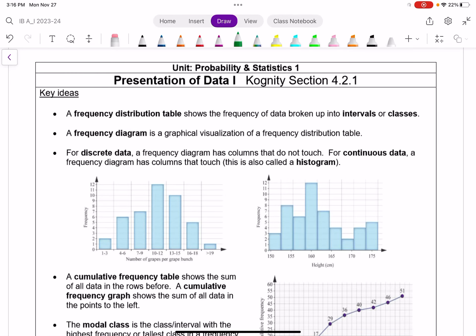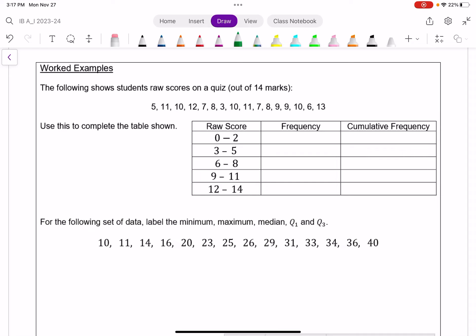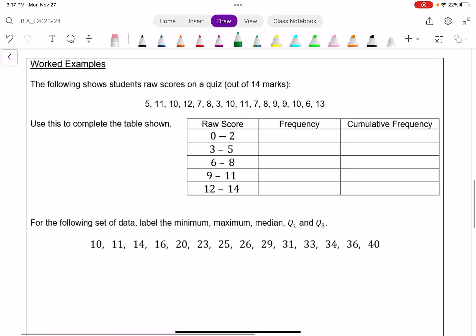So this lesson, we have a fair amount of terms at the beginning of the notes. I'm not going to read through all these, but we're going to use them throughout this. Let me just get straight to this. A cumulative frequency table is a frequency table which shows you the totals as we go along. For example, I have a bunch of data here showing the raw scores on a quiz out of 14 marks for a number of students.